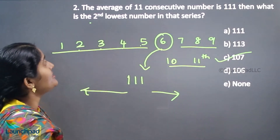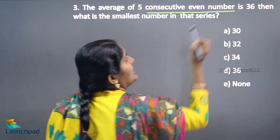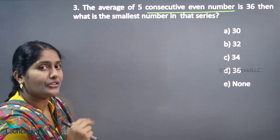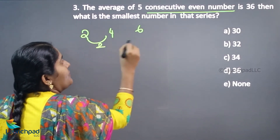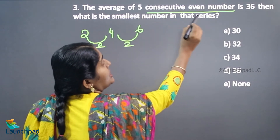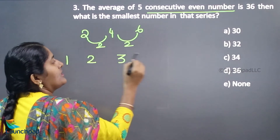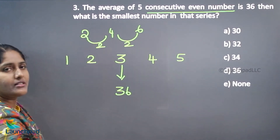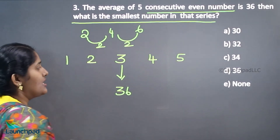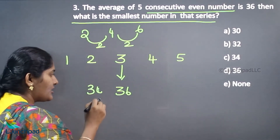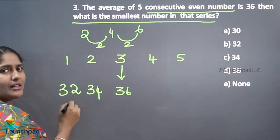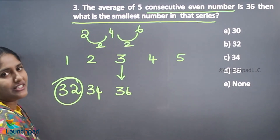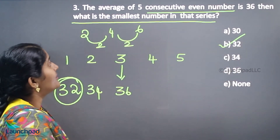Next question: the average of 5 consecutive even numbers is 36. Even numbers have a difference of 2 — for example 2, 4, 6, 8. The middle term is always the average, so the third term is 36. Going backward by 2: the previous number is 34, and the first (smallest) number is 32. The answer is 32, option B.